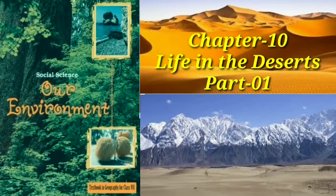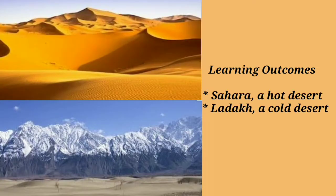Hello students, welcome back to another chapter of geography — chapter 10, life in the deserts. A desert is a barren area of land where little precipitation occurs and the average annual rainfall is less than 25 cm. Consequently, living conditions are hostile for plant and animal life. About one third of the land surface of the world is arid or semi-arid. This also includes most of the polar regions, which are sometimes called cold deserts.